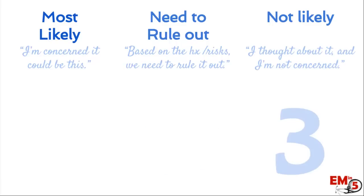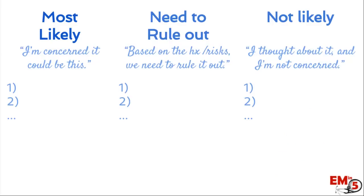Last, we have the not as likely column. These are things that you thought about, did a good history and physical, and you really just aren't concerned about. You don't think this is what the patient has.